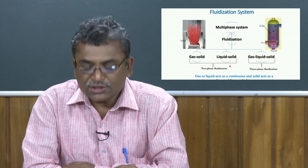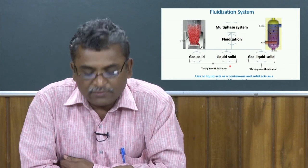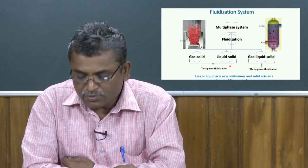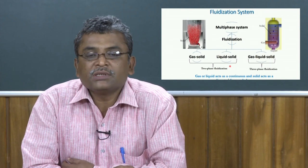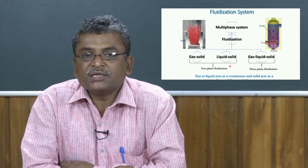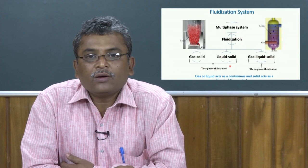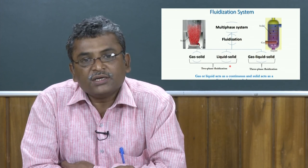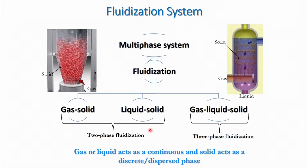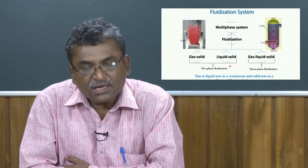Depending on the application, a three-phase fluidization system will be applied. If gas is supplied in a liquid medium, the gas will be dispersed as bubbles through a distributor. The distributor has holes of different sizes, producing different sizes of bubbles. In that case, the liquid phase will be continuous, the solid will also be discrete forming a slurry with liquid, and the gas will be the dispersed medium.